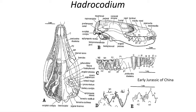Hydrocodium, like Morganucodon, is a true mammal. The ear and jaw resemble more advanced mammals, and the teeth occlude with each other when the jaw is closed, with distinct molars, premolars, canines, and incisors. Its tiny size also was a feature of most Mesozoic mammals, which would remain smaller than the size of a typical house cat for the next 130 million years.